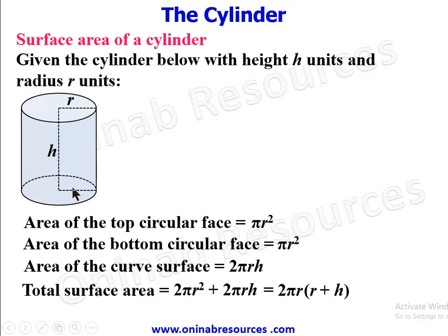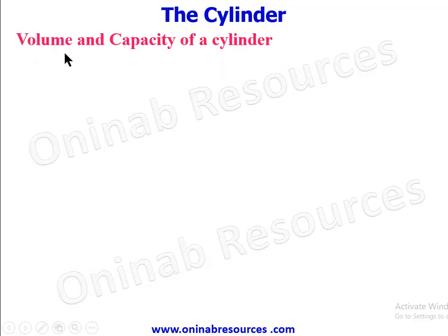If the cylinder is closed at one end, we only have one circular base plus the curved surface, giving πr² + 2πrh. If it is open at both ends — a hollow cylindrical object or a cylindrical pipe — the surface area is just the curved surface area, which is 2πrh.